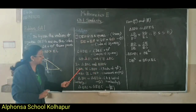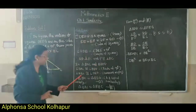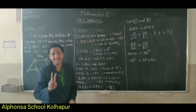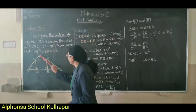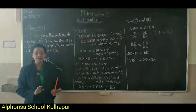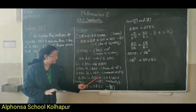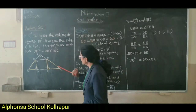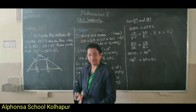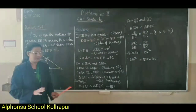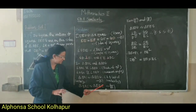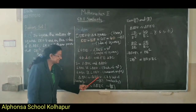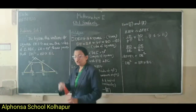In triangles BAC and BDG, angle BAC is congruent to angle BDG, each being 90 degrees, and angle ABC is congruent to angle DBG as a common angle. Therefore, by the AA test, triangle BAC is similar to triangle BDG. Similarly, we can show that triangle BAC is similar to triangle FEC by the same reasoning.